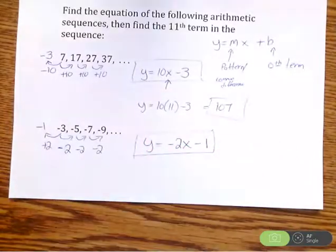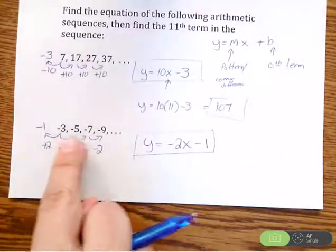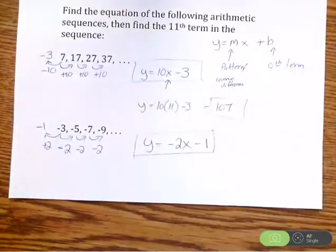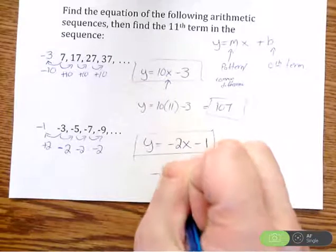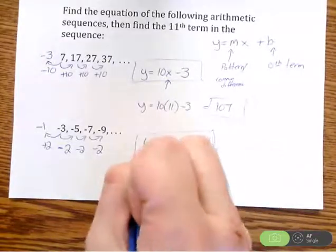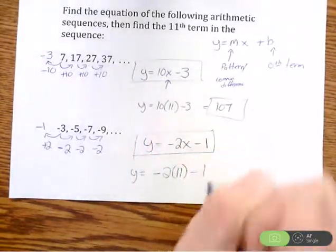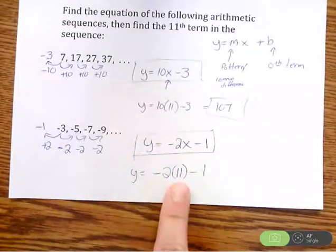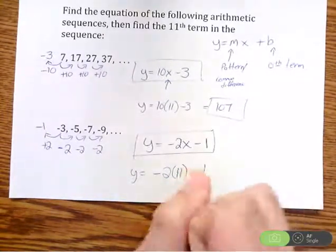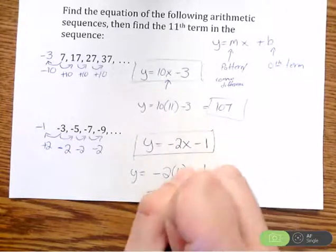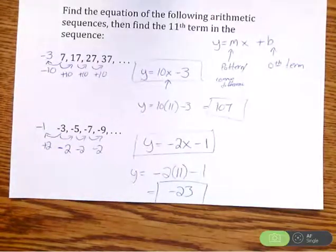To find the 11th term, I plug in 11 for x: negative 2 times 11 is negative 22, minus 1 is negative 23. So the 11th term in this sequence is negative 23.